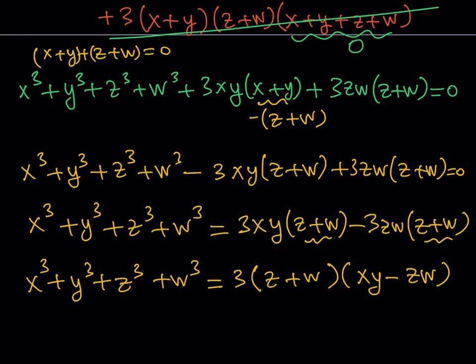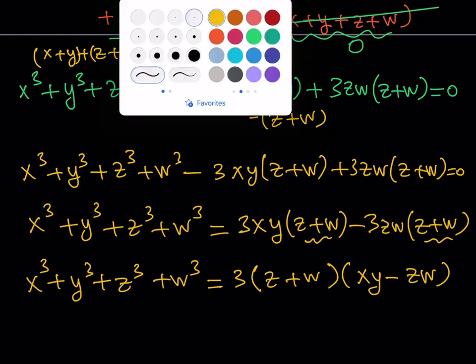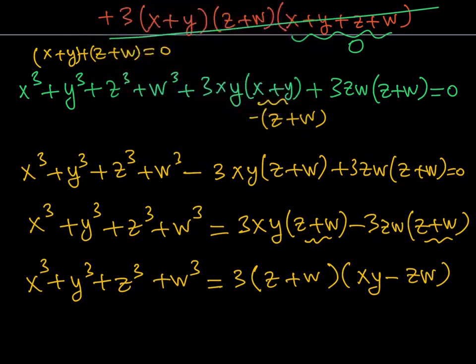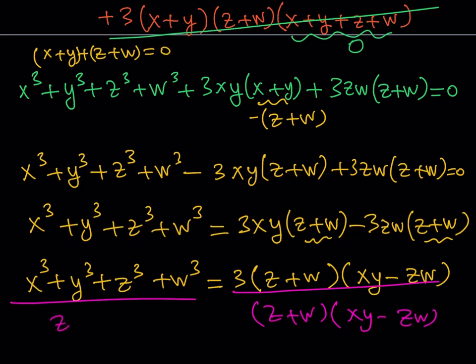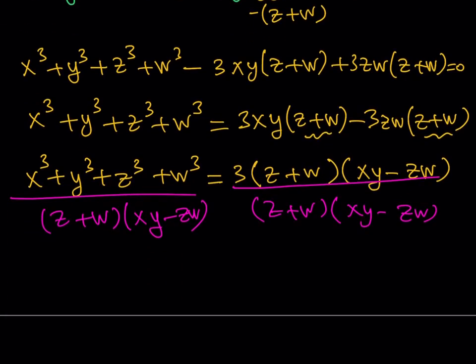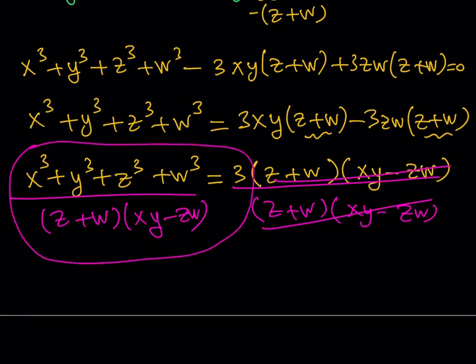Because our expression has that part in the denominator and the other part in the numerator. So in order to get our expression from here, what I can do is basically divide both sides by (z + w) times (xy - zw). And that should give us what we need. This is what we're looking for. This is our original expression. And this is going to be 1. So the answer is going to be 3. So basically, the expression that we've been looking for is equal to 3. So the answer is 3.